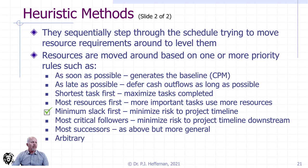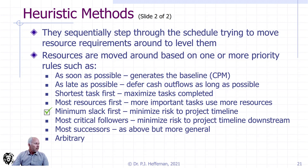Shortest task first would maximize the number of tasks completed — depending on the value of the task versus the quantum of material delivered, that may or may not be of value to you. Most resources first — the implication is that where something has a lot of resources implicated, it is normally the most important, allowing us to prioritize by quantum of resources. One of the ones I like the most is minimum slack first, which gives priority to your critical path, and outside of the critical path, you start looking at non-critical activities that have the least breathing room — take those first, and those with the greatest breathing room we allow to slide a little bit, hopefully still within their slack. This one seems to have a fairly great following and the logic is fairly obvious.